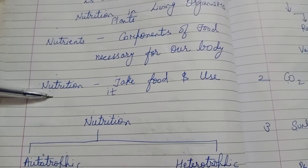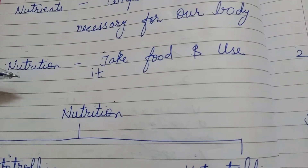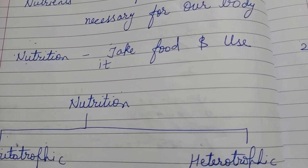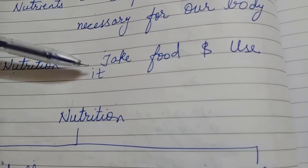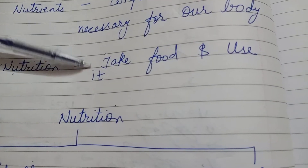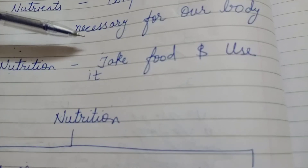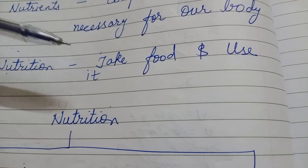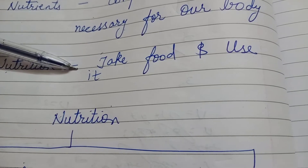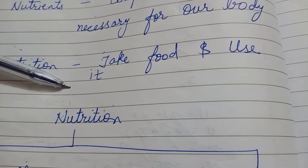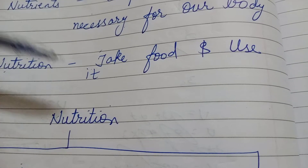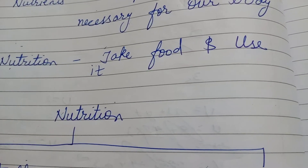Then comes the nutrition. Definition of nutrition: the process of obtaining food by an organism and using it as energy is called nutrition. Means we are eating the food and using it as energy in our daily routine — that is called nutrition.